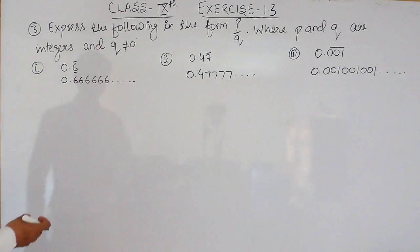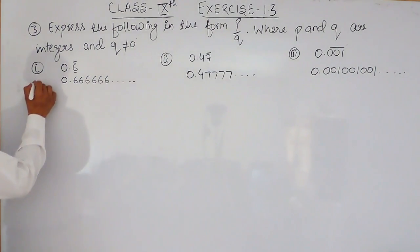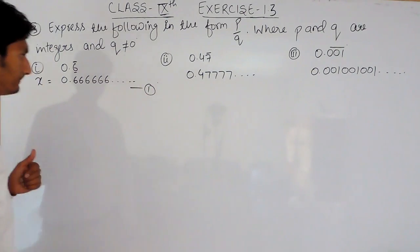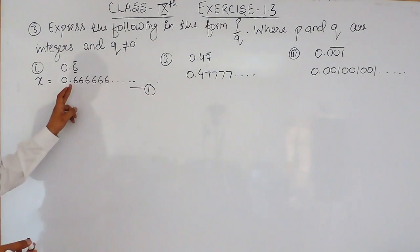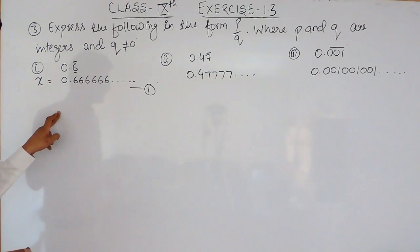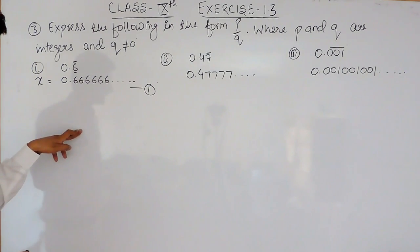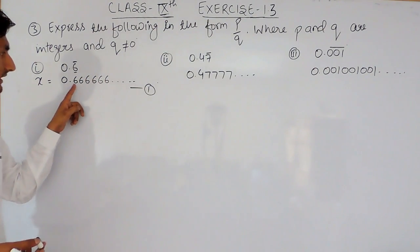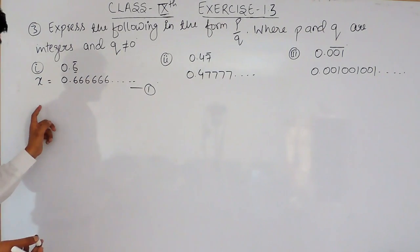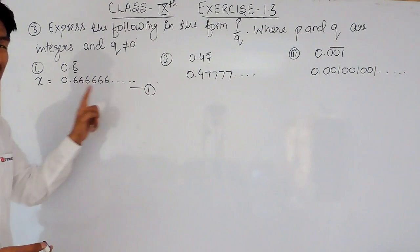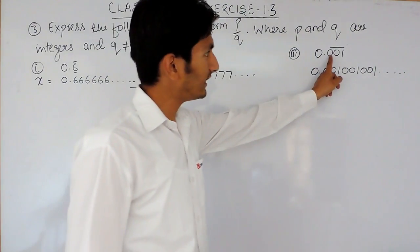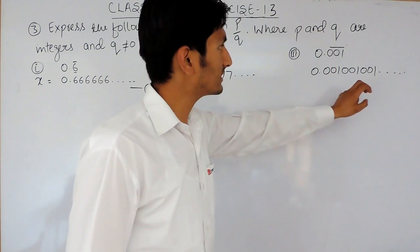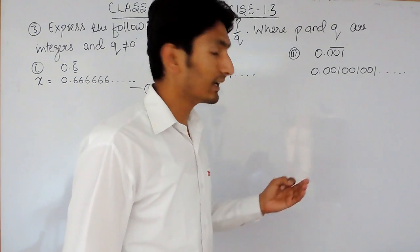Now, to convert this into p upon q, first consider the expression equal to x — that is our first equation. Then you multiply this equation with 10, 100, or 1000 depending upon the number of digits repeating. Here one digit is repeating so multiply by 10. In the third case, three digits are repeating so multiply by 1000.